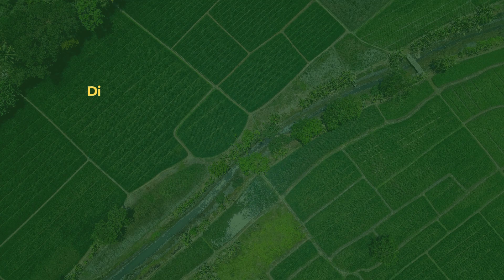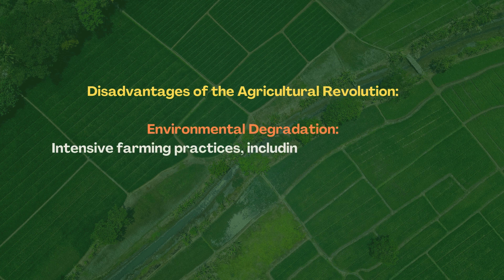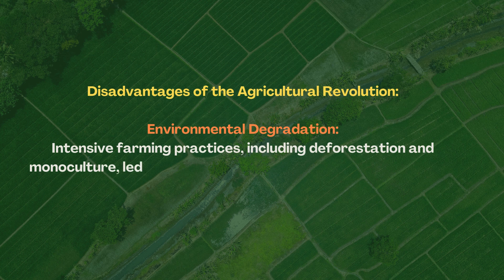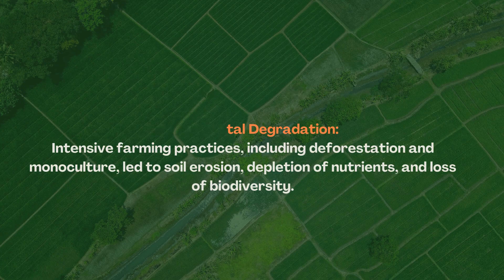Disadvantages of the Agricultural Revolution. Environmental Degradation: Intensive farming practices, including deforestation and monoculture, led to soil erosion, depletion of nutrients, and loss of biodiversity.